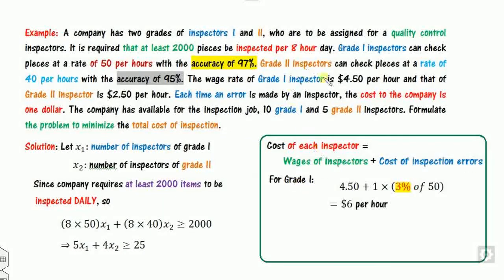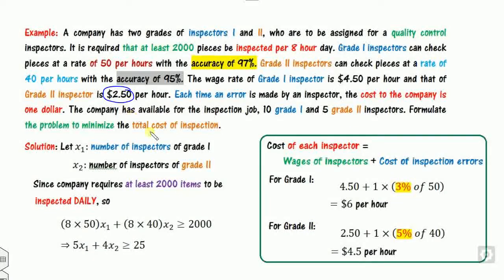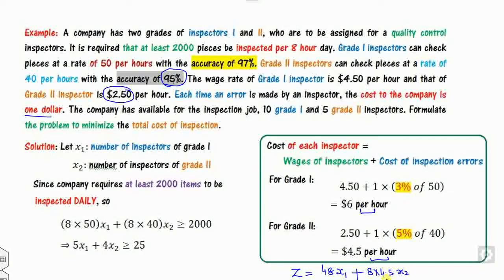For grade 1: accuracy is 97%, so error rate is 3% of 50 pieces per hour, giving 1.5 errors per hour. The cost per grade 1 inspector per hour is $4.50 + 1×1.5 = $6. For grade 2: accuracy is 95%, error rate is 5% of 40 = 2 errors per hour. Cost is $2.50 + 2 = $4.50 per hour. The total cost is 8×6×X1 + 8×4.5×X2, which simplifies to 48X1 + 36X2.